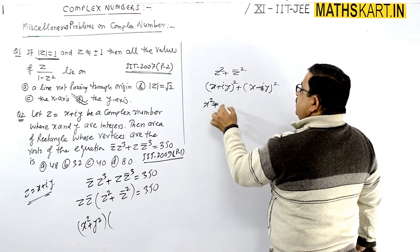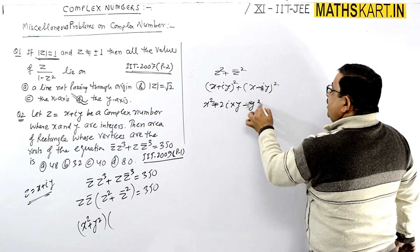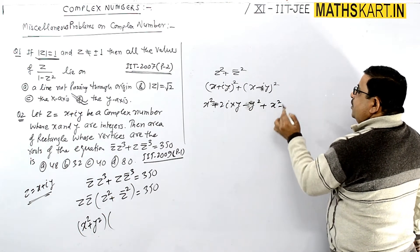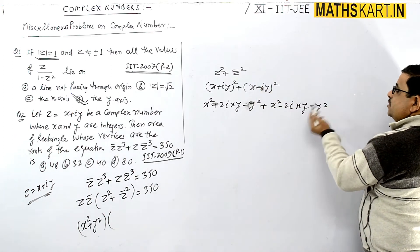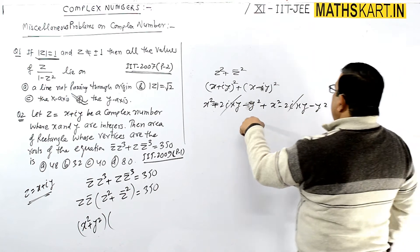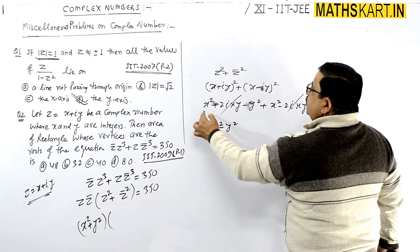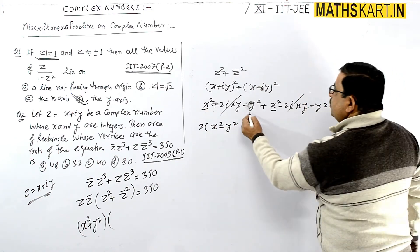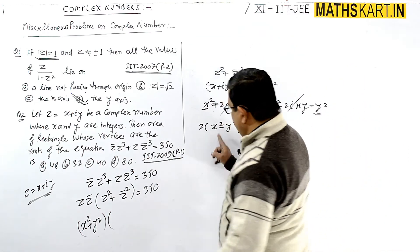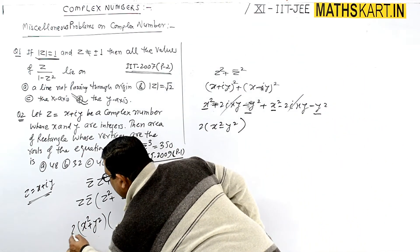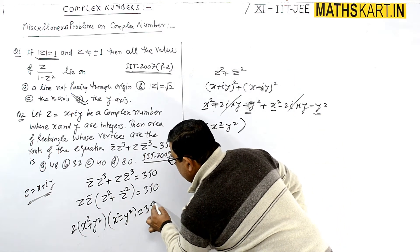Expanding z² plus z̄²: we get x²+i²y² plus 2i·xy plus x²+i²y² minus 2i·xy. The imaginary terms cancel and i²y² gives minus y², so z² plus z̄² equals 2 times x² minus y². Substituting back: x²+y² times 2 times x²-y² equals 350, which simplifies to x²+y² times x²-y² equals 175.